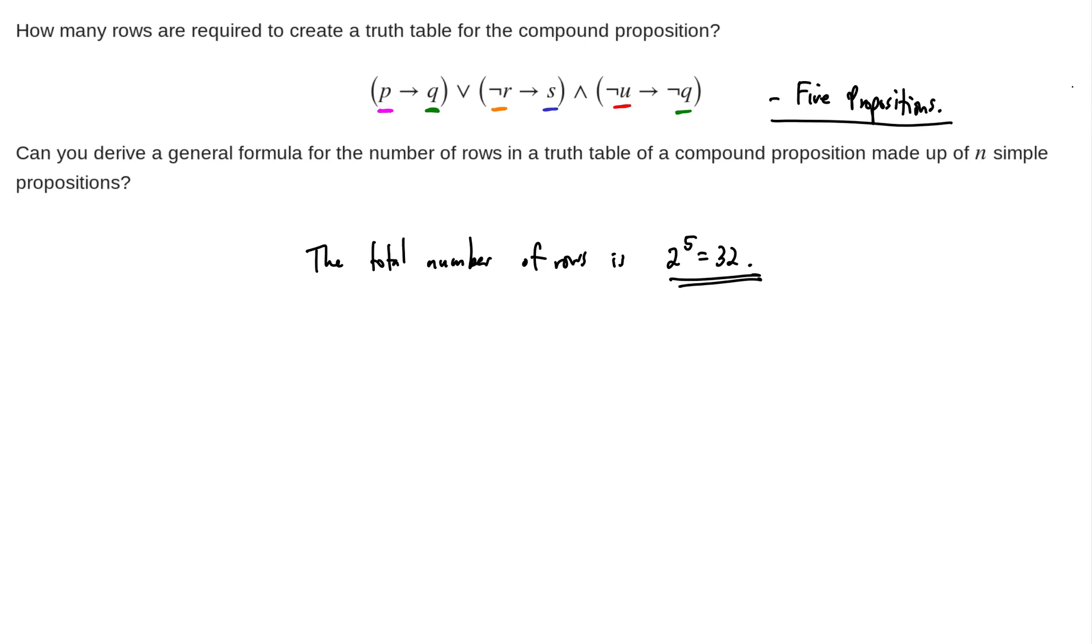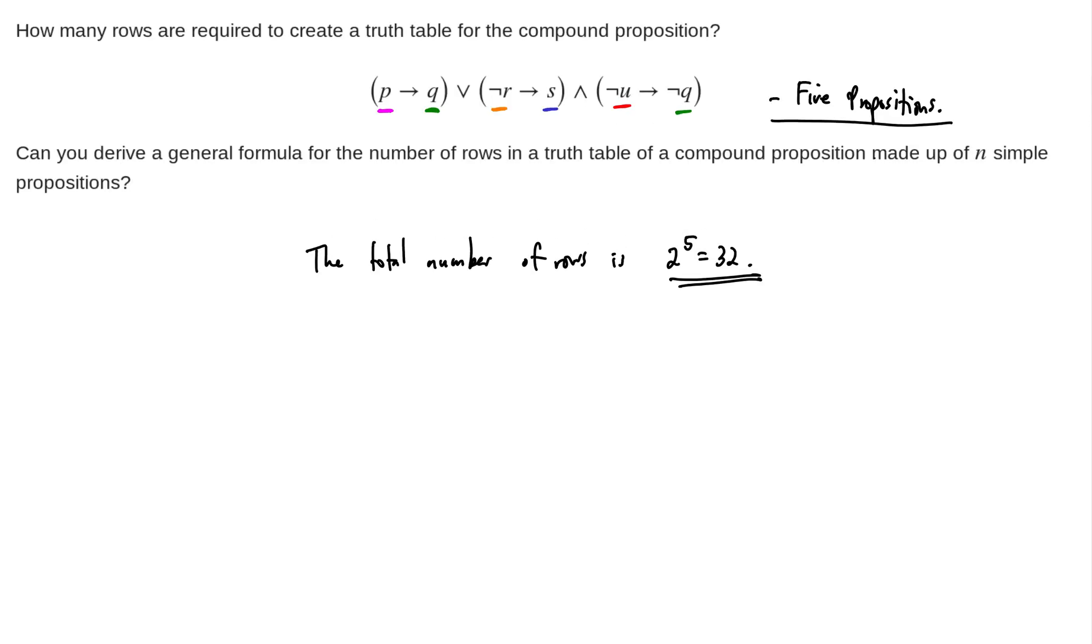Now, the second part of the question is can we derive a formula for the number of rows, a general formula for the number of rows in a truth table with compound propositions made up of N simple propositions. So the idea here is that the N, the number N, is the number 5 from this example, right? So we had 5 up here, I wrote propositions. There are 5 simple propositions and then everything else is built out of those. Those are P, Q, R, S, U. Not Q, not U, and not R are actually compound propositions by this reasoning. And so just based on our reasoning that we got this 2 to the 5th power, we can say then that a truth table with N propositions, N simple propositions, is going to have 2 to the N rows.